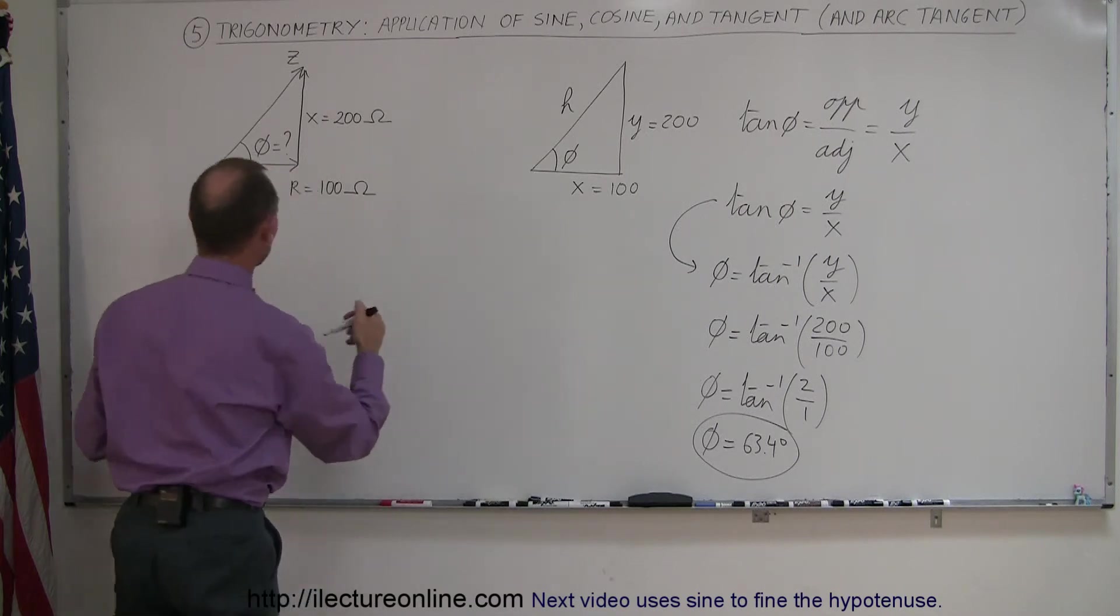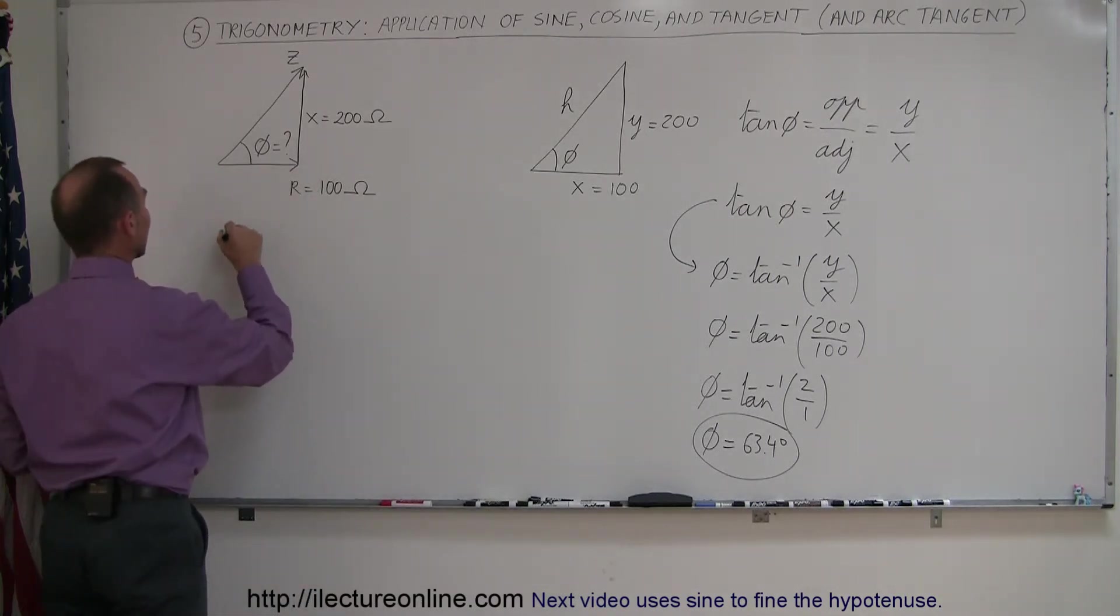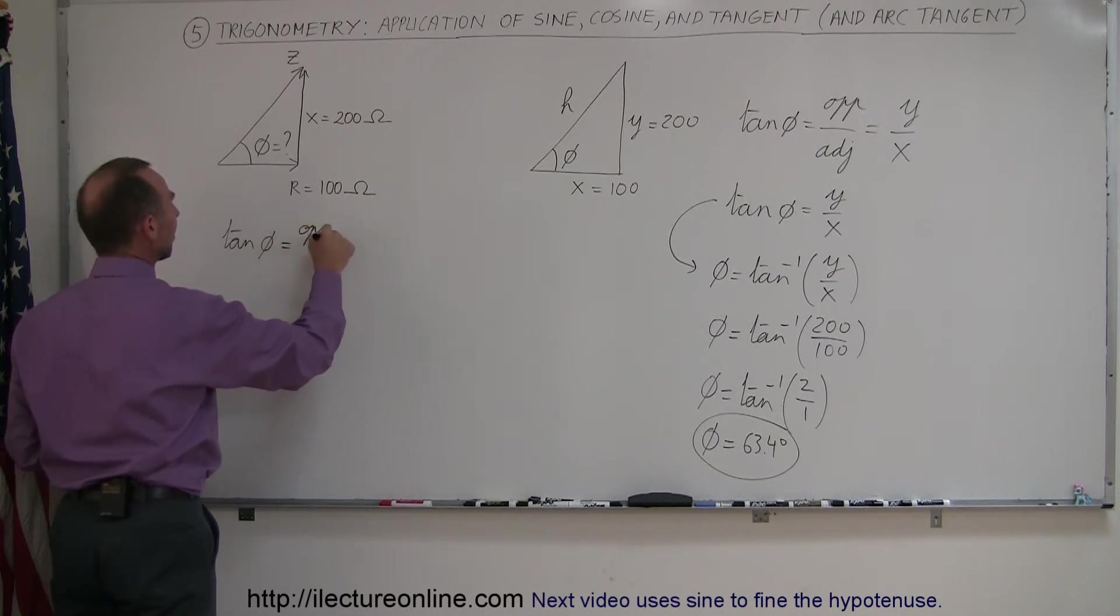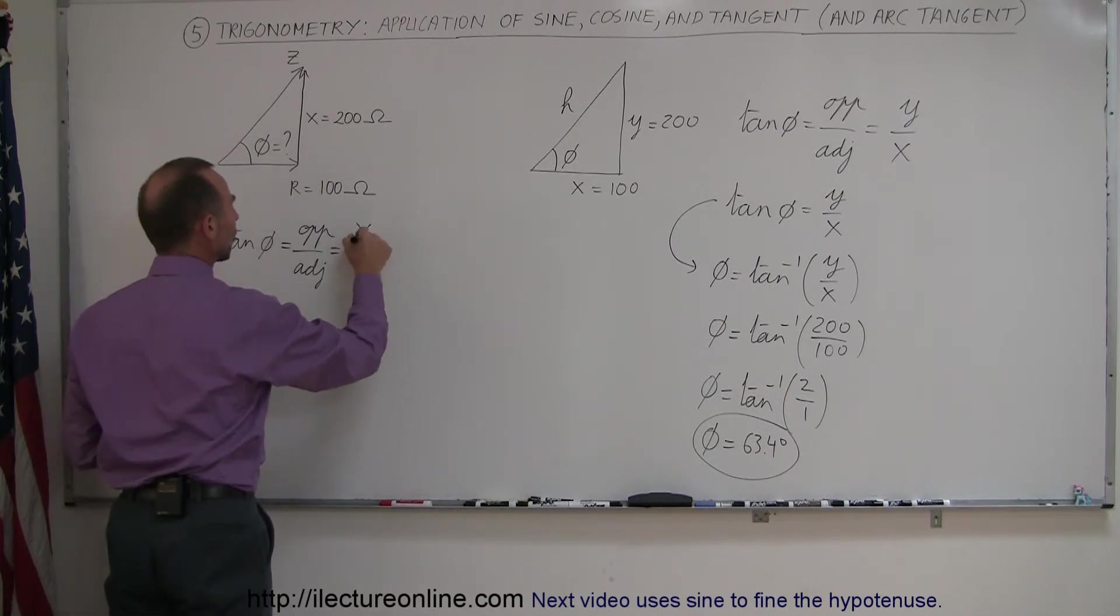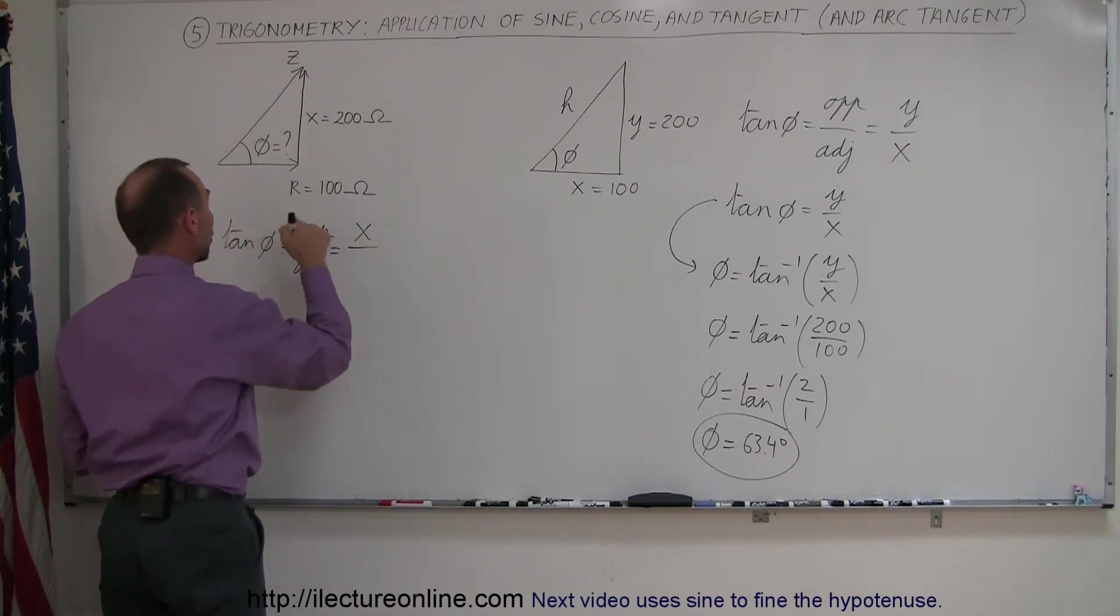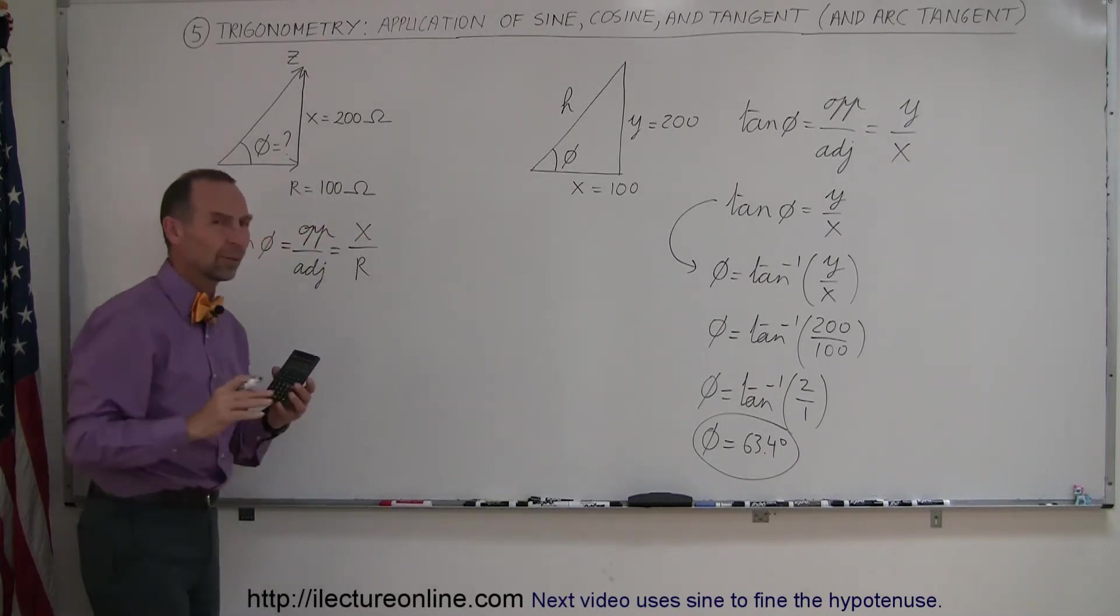Now, over here, very same thing. We're trying to find the angle so we can say that the tangent of phi is equal to the opposite side over the adjacent side. And in our particular example here, the opposite side is x, which we call the reactance, and r, which is called the resistance.